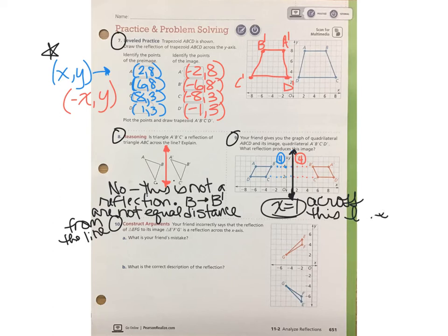So the reflection is across this line. And you probably can't read that, so I'm going to try that again. There we go. All right, moving on to number 10.